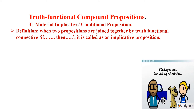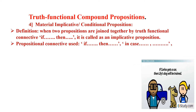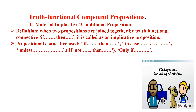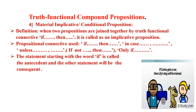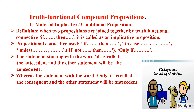We define the material implicative or conditional proposition as when two propositions are joined together by the truth functional connective 'if...then,' then it is called an implicative proposition. The propositional connective variations are: if...then, in case, unless (means if not), and only if. The statement starting with the word 'if' is called the antecedent and the other statement is the consequent, whereas the statement with the word 'only if' is called the consequent and the other statement is the antecedent.